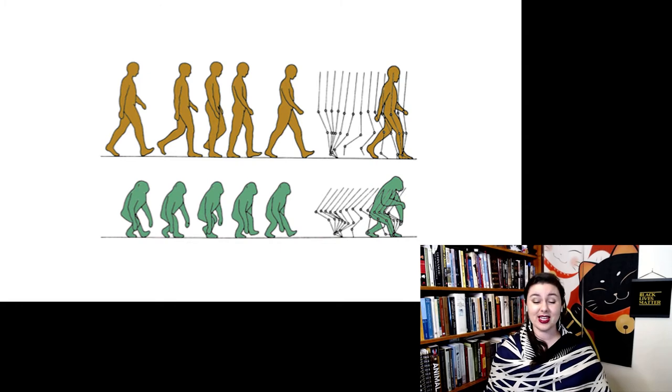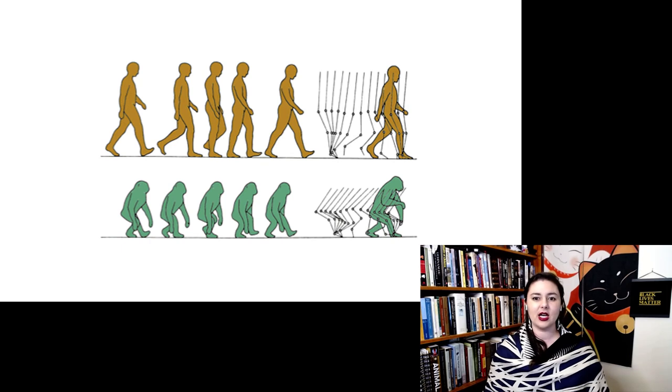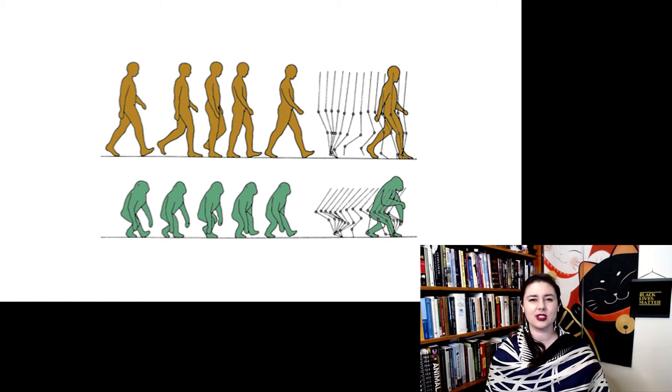And you can compare that to the little wire model of our chimpanzee here. They have this bent hip, bent knee walking where they kind of throw one side of their body forward. Remember, they actually don't have the side stabilizer muscles that we do. So they just kind of throw their entire body forward. It's not as efficient as us.